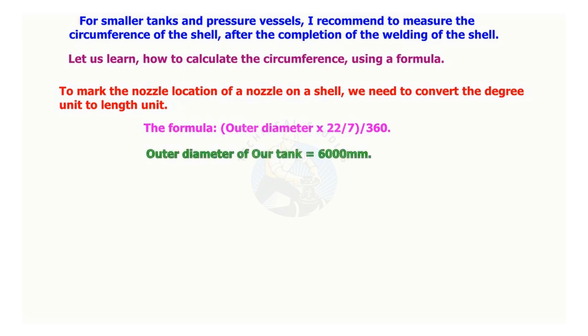Outer diameter of the tank is 6000 millimeters. Nozzle orientation is 95 degrees. Circumference is 6000 multiplied by 22/7 equals 18,857 millimeters.